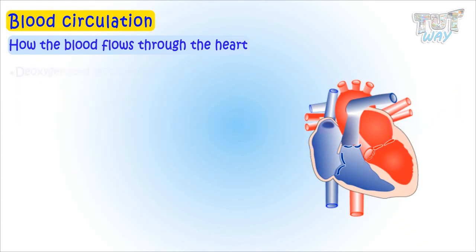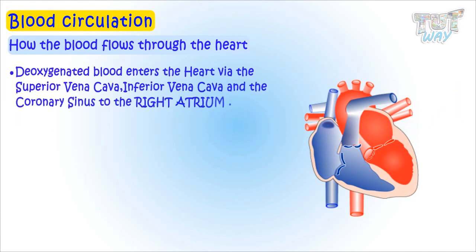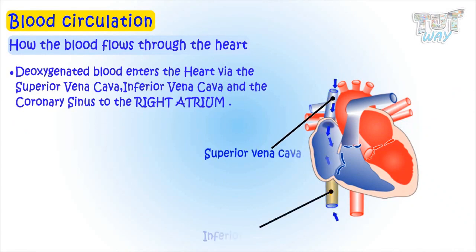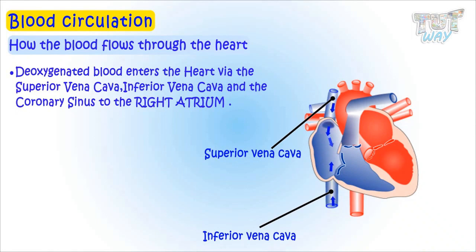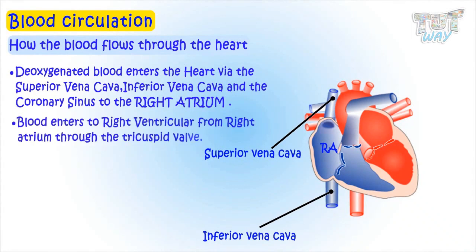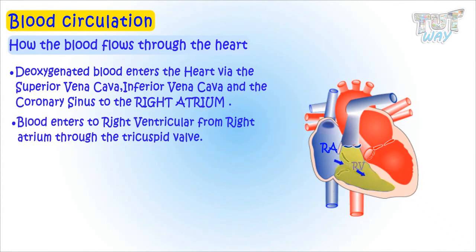Deoxygenated blood enters the heart via the superior vena cava, inferior vena cava, and also the coronary sinus to the right atrium. From the right atrium, blood is pushed to the right ventricle through the tricuspid valve.